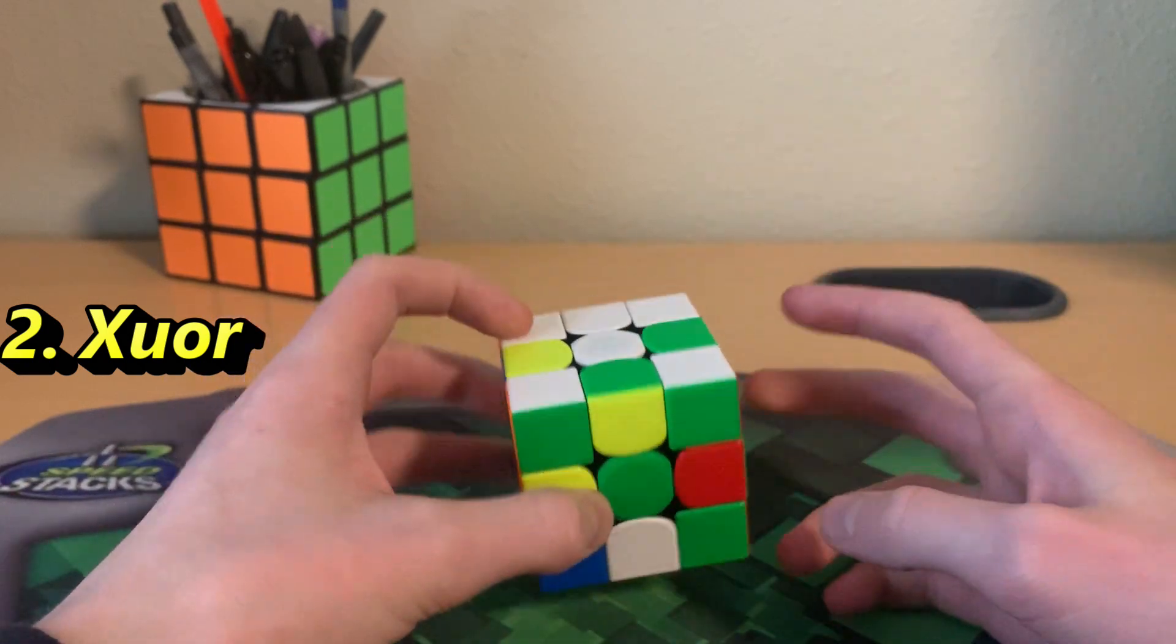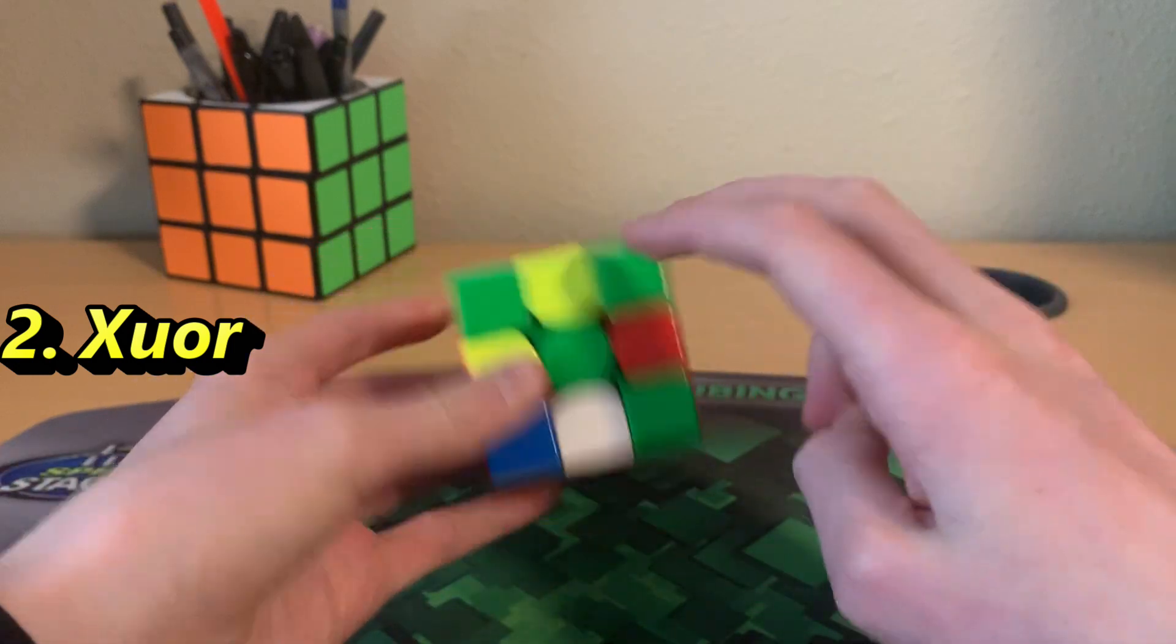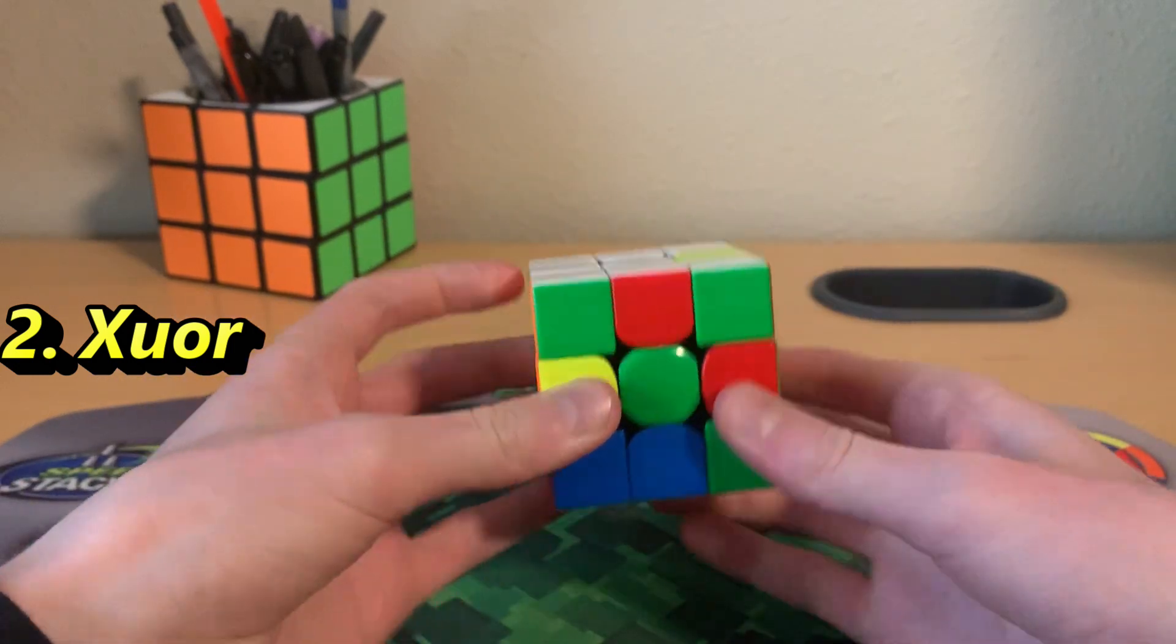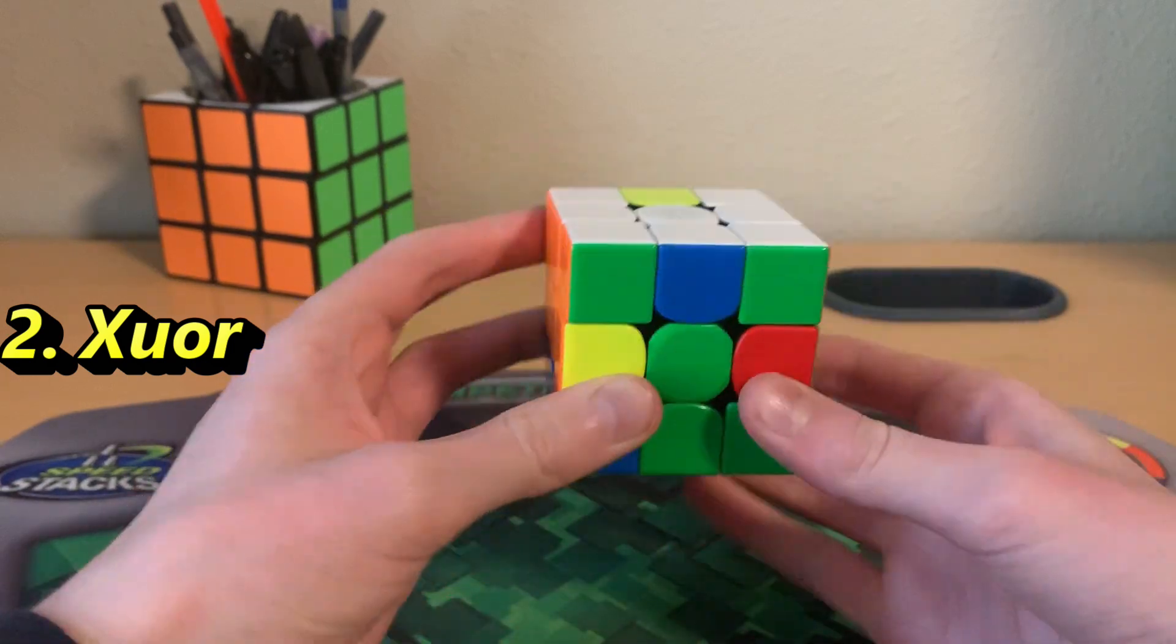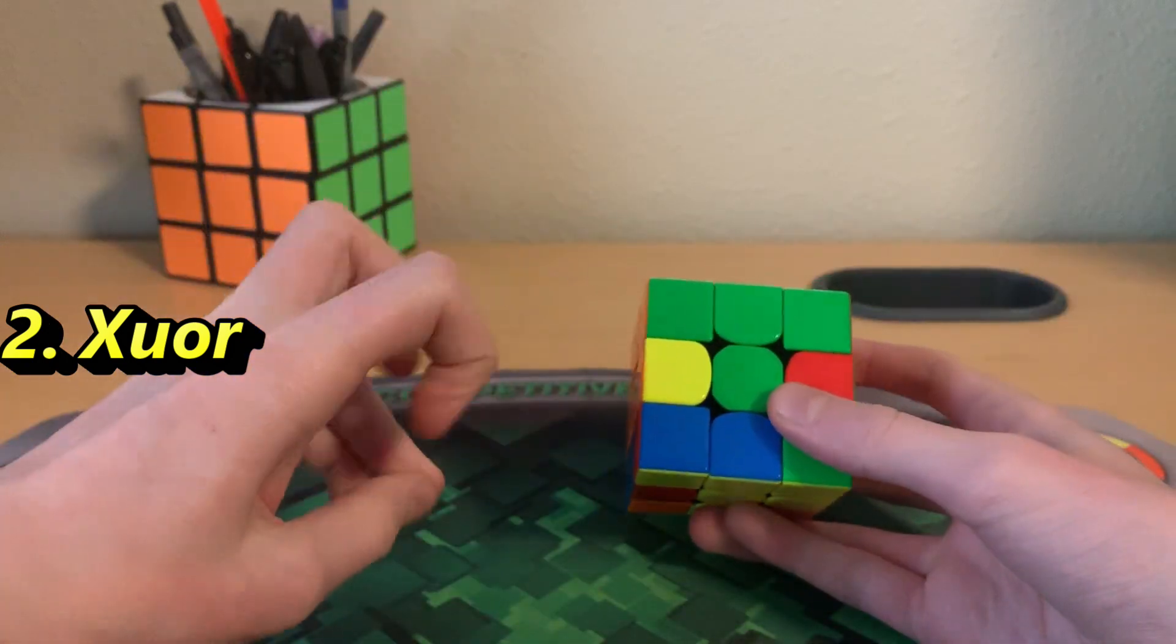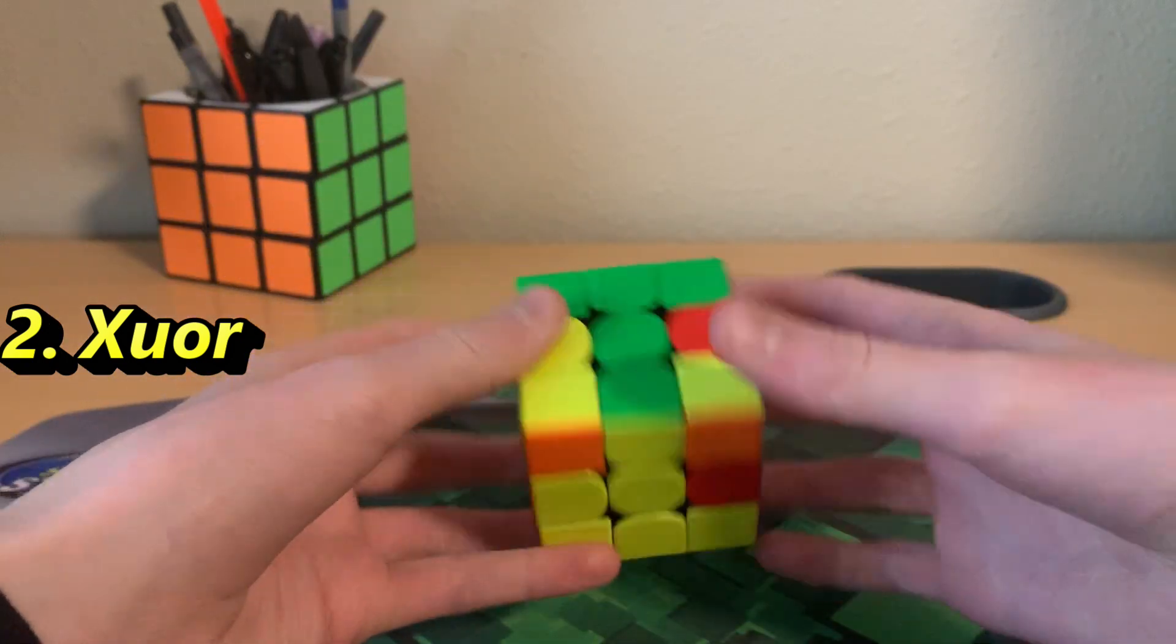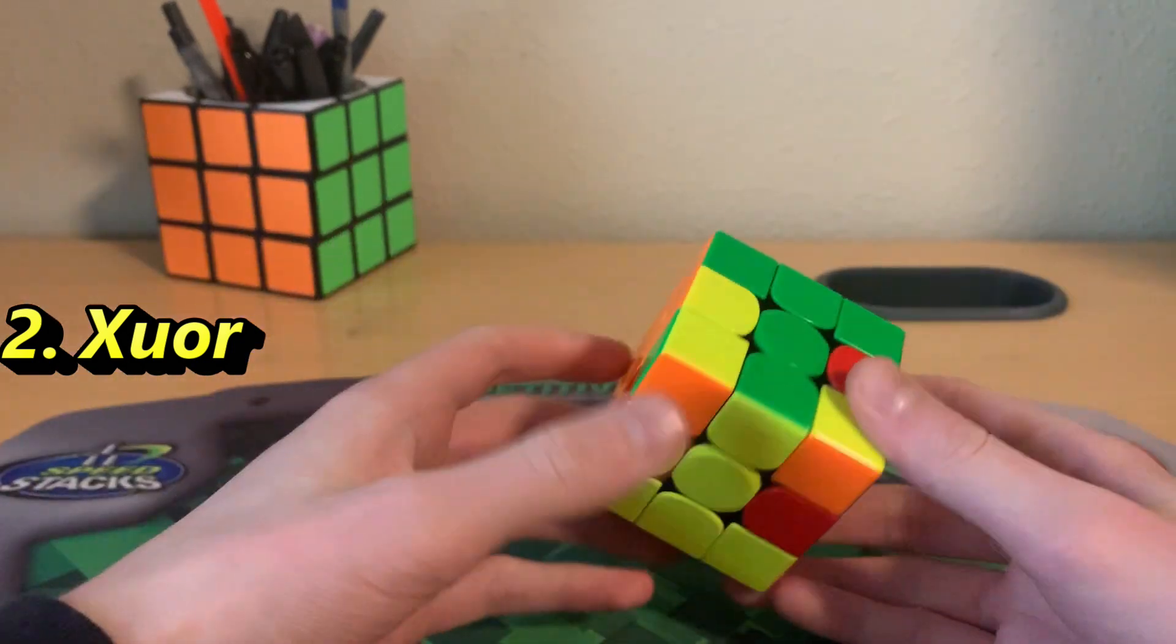So now we solve the last six edges from here, ignoring everything else. Solve the last six edges. So these two need to orient, do LR, and a three cycle. You can have parity, but you just do a D2 to fix that. Alright, so we've done CMLL and LSE.